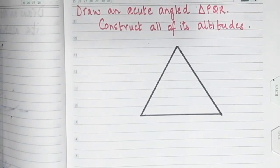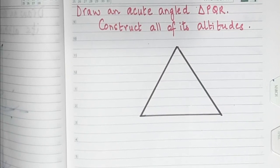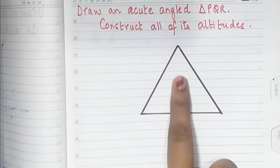Now we'll see how to construct the altitudes of an acute angle triangle. So now we already have an acute angle triangle drawn over here.